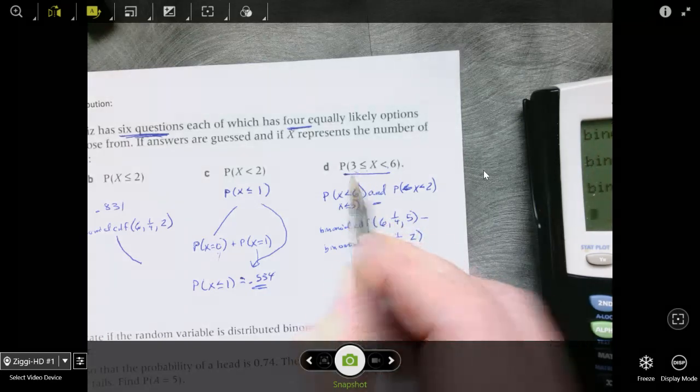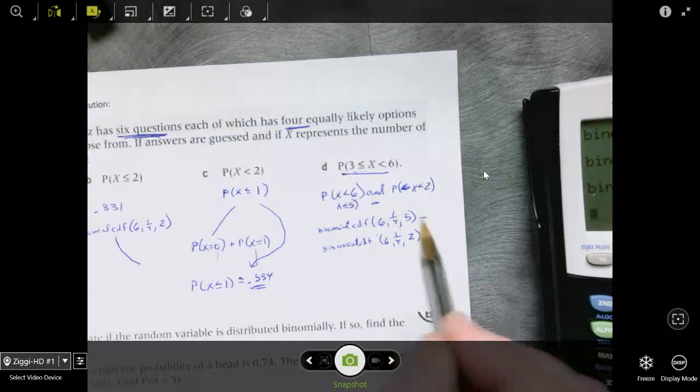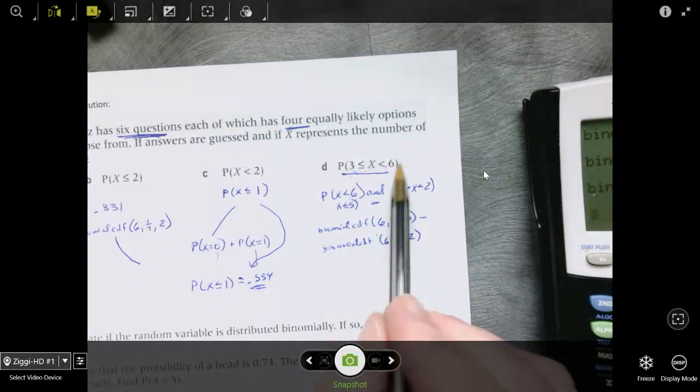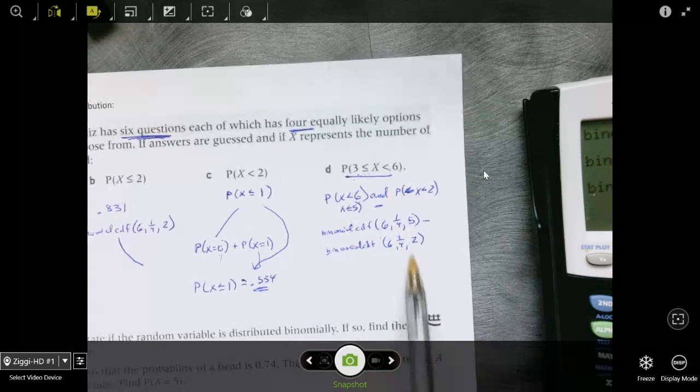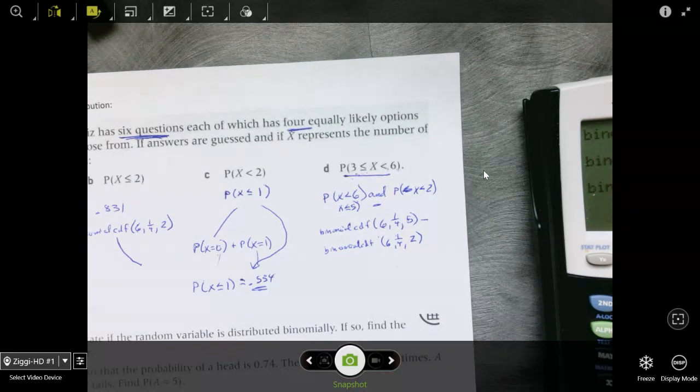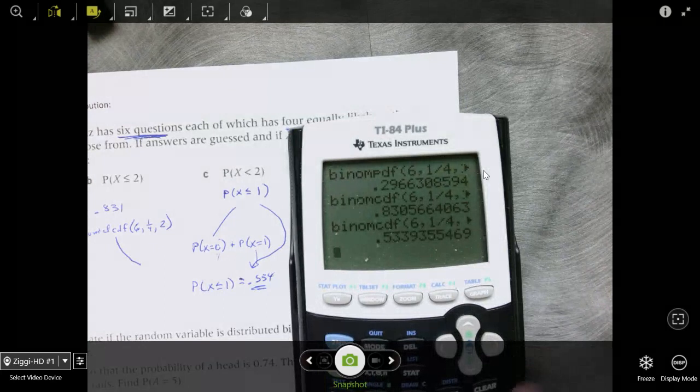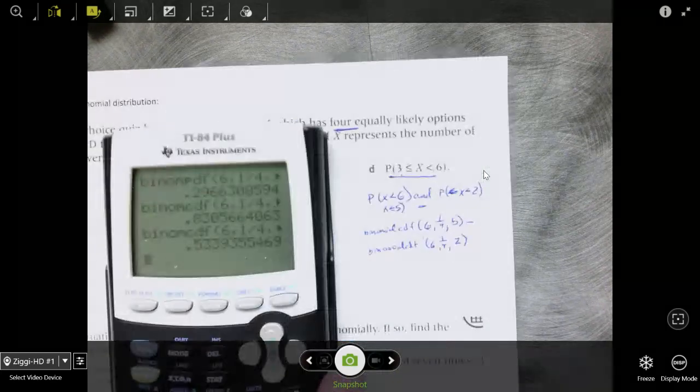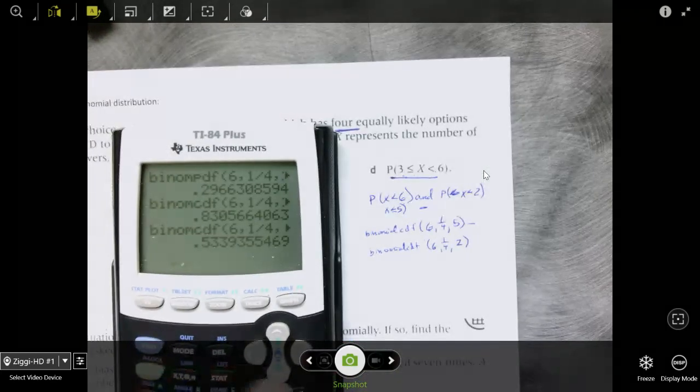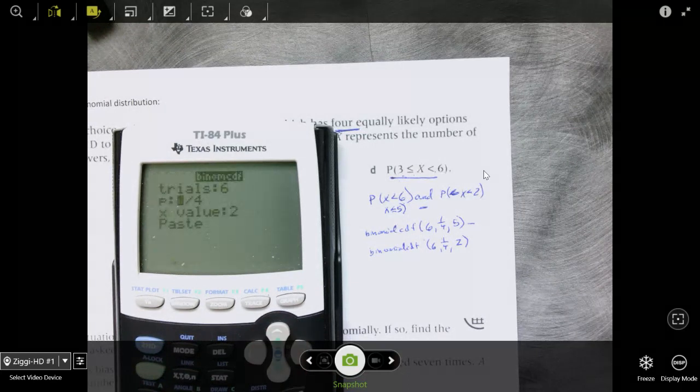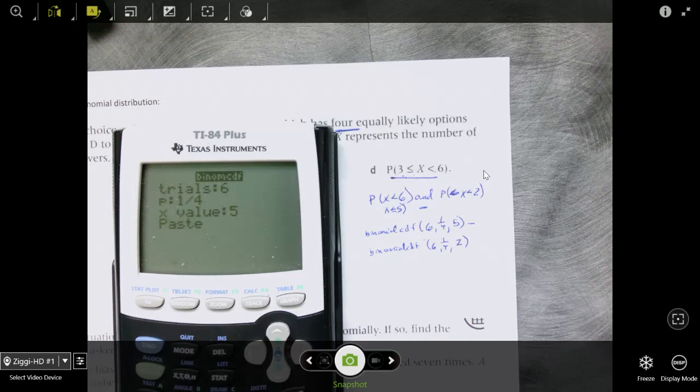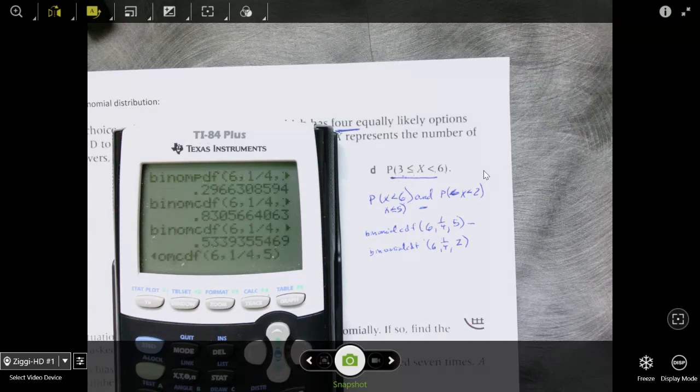So binomial CDF 6, 1 fourth, 5 and then I can just do minus and do it again. 6, 1 fourth, 2 and we had to do that too because we didn't want to include, we want to keep the 3. We don't want to discard it or subtract it. 6, 1 fourth, 3 and you get 0.169. Really important that you push the buttons and get that to work out.